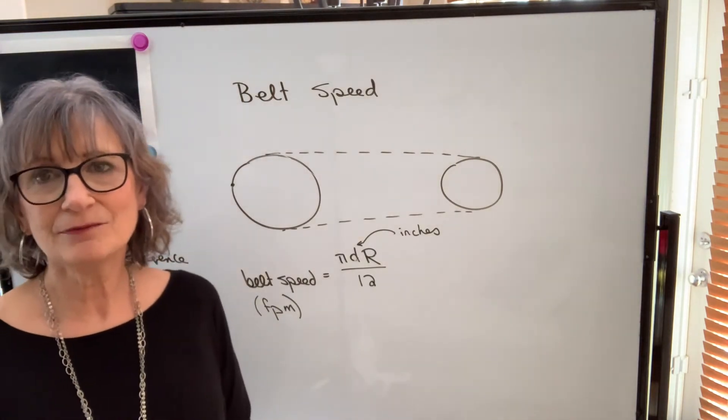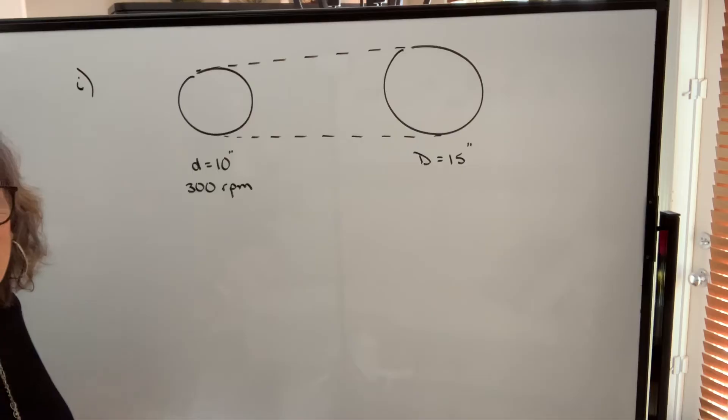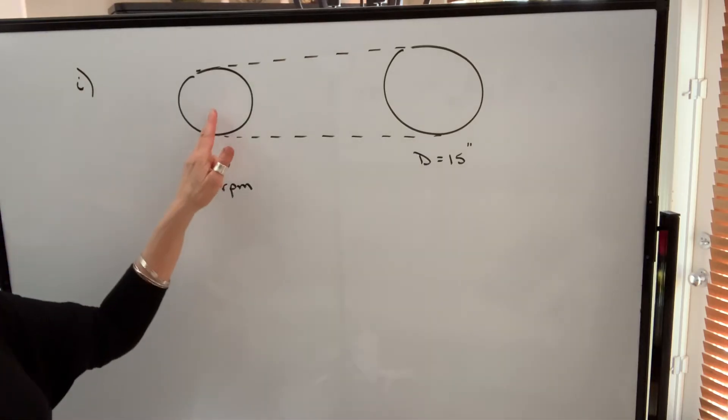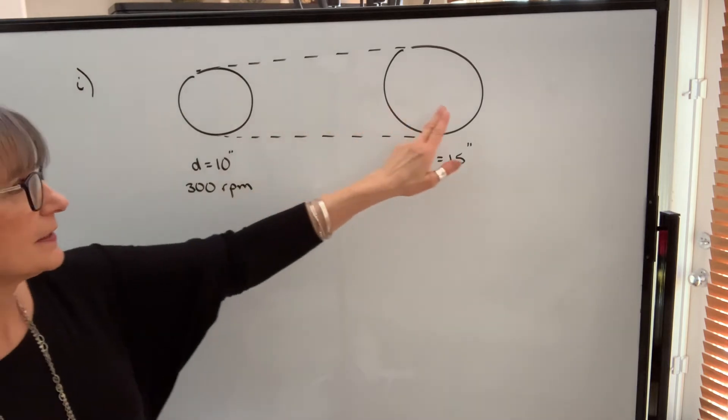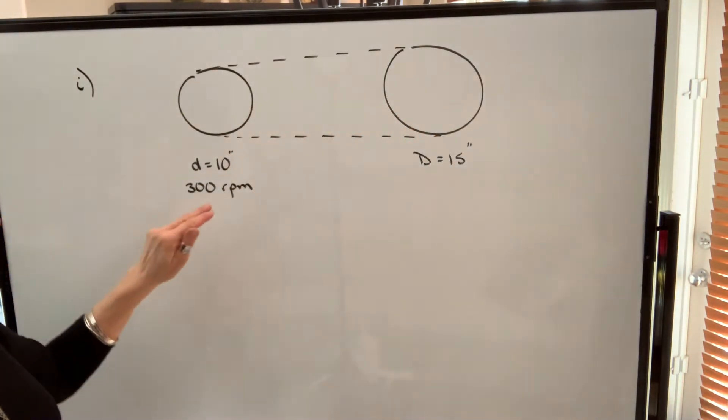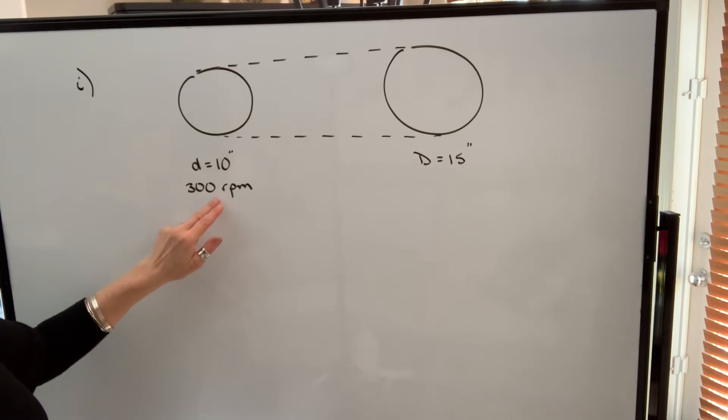Let's take a look at finding belt speeds in examples. In our first example, the diameter of this pulley is 10 inches. This diameter is 15 inches. The RPM of the 10 inch pulley is 300.